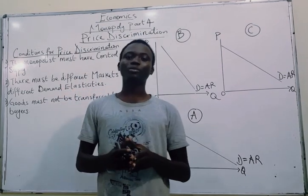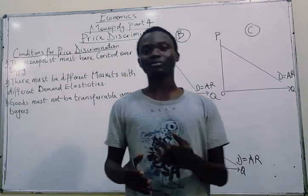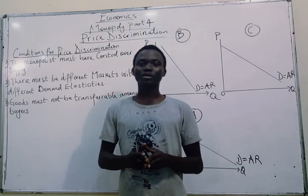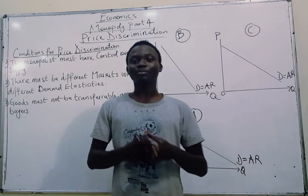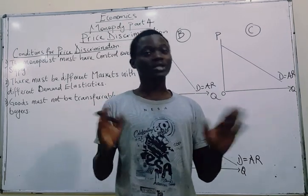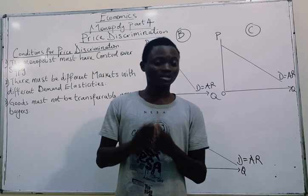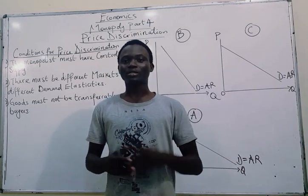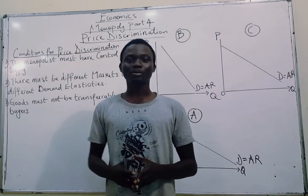When do we say a monopoly is discriminating in terms of prices? Price discrimination occurs when a monopolist decides to charge different prices to different consumers based on reasons not related to changing costs. Cost is not increasing, cost is not decreasing, but the producer decides to charge some people more and charge some other people less.